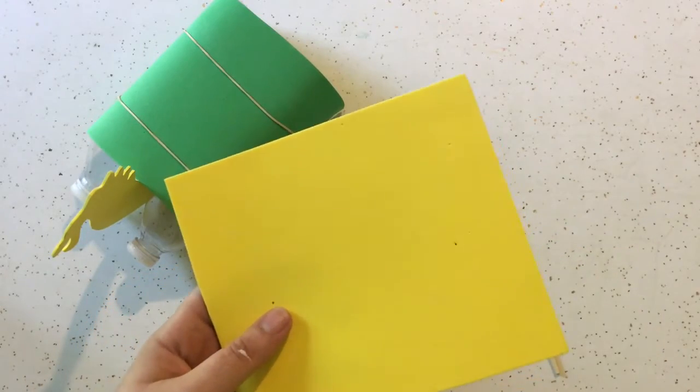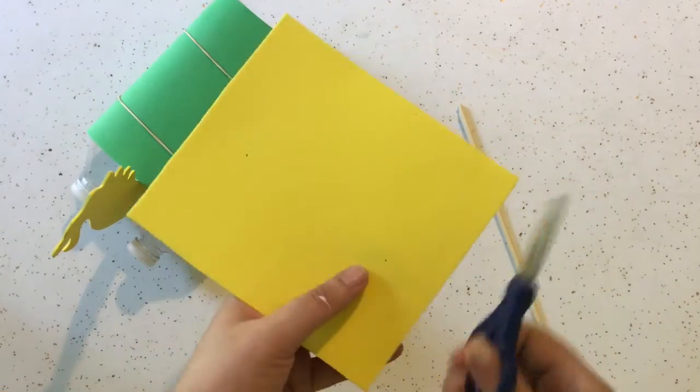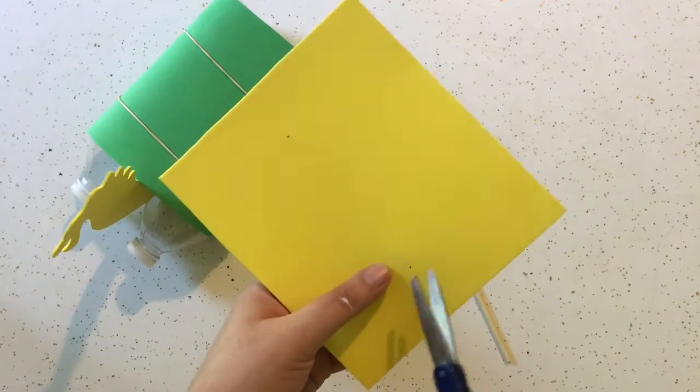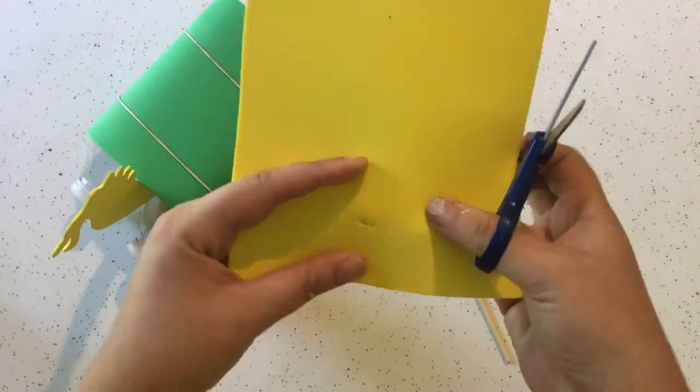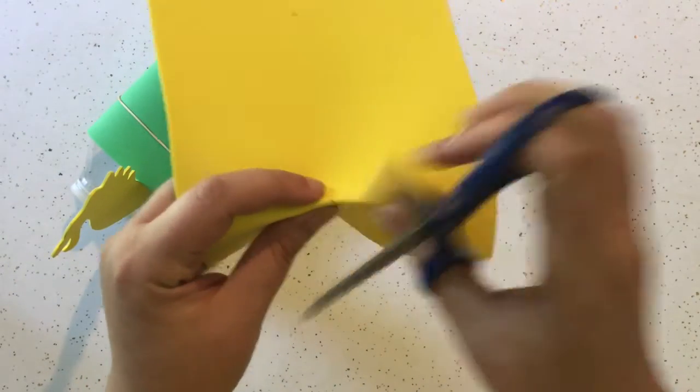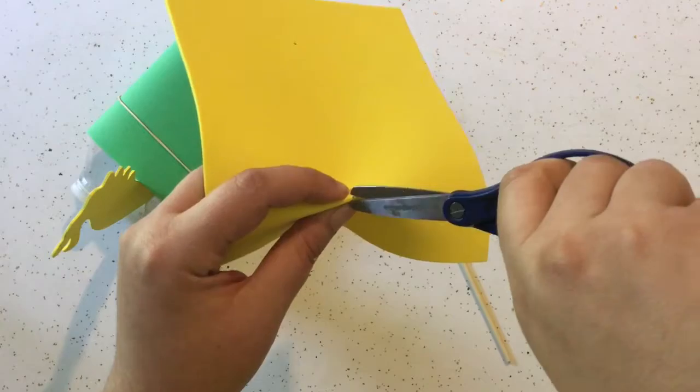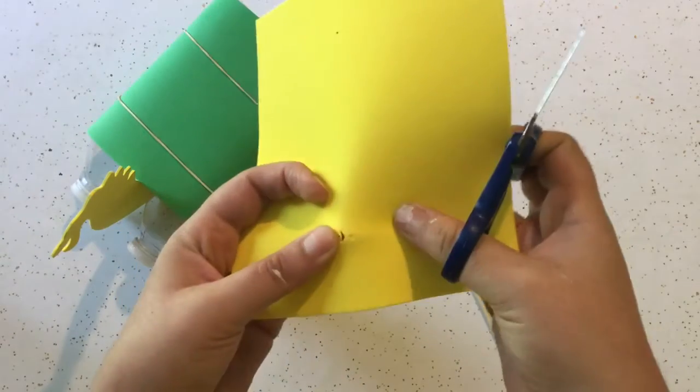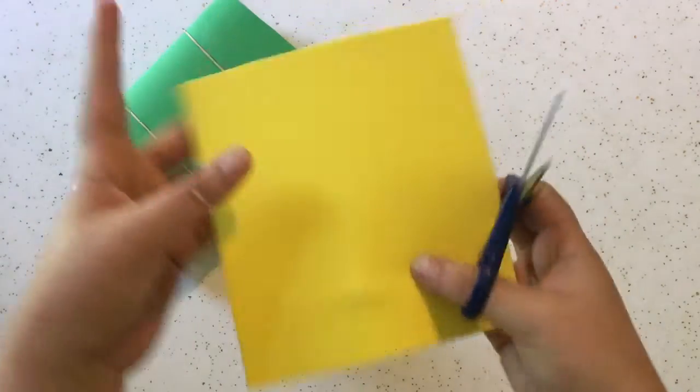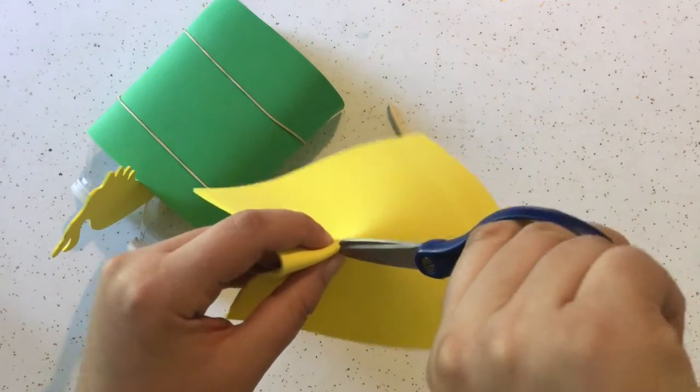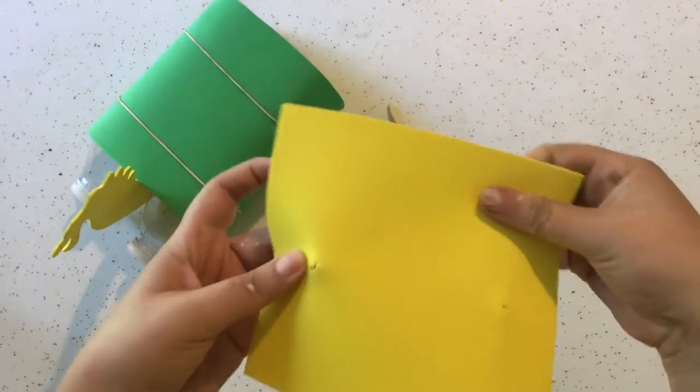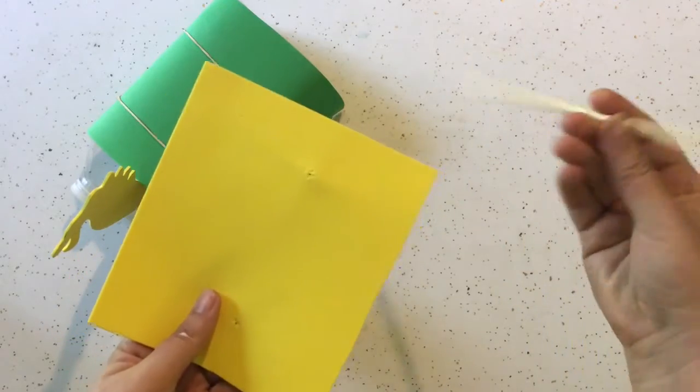Just take your scissors and you can kind of fold right where that dot is and give it a little snip. It just needs a tiny little hole like that. Do that on both dots.